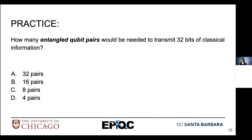Here's a quick question: how many entangled qubit pairs would be needed to transmit 32 bits of classical information?